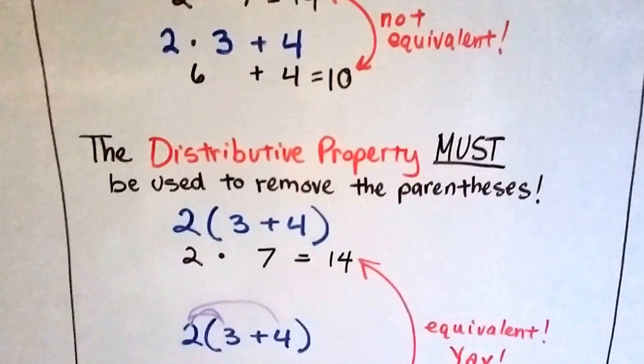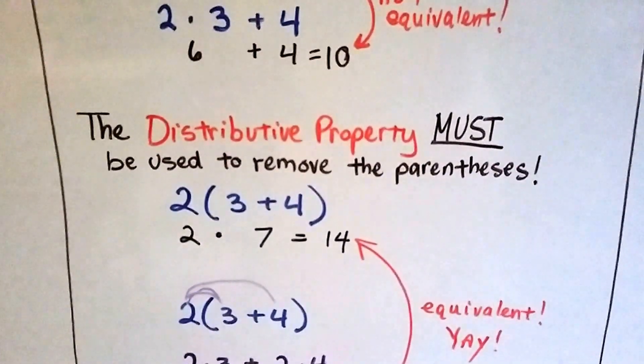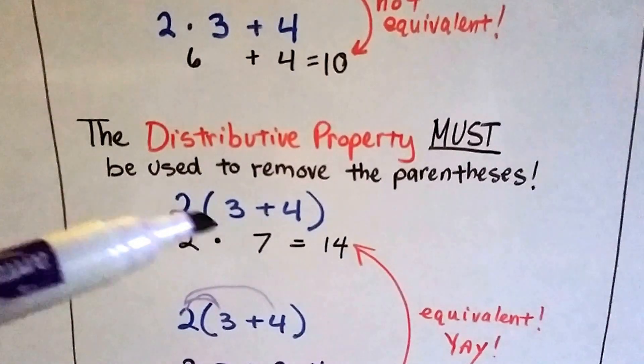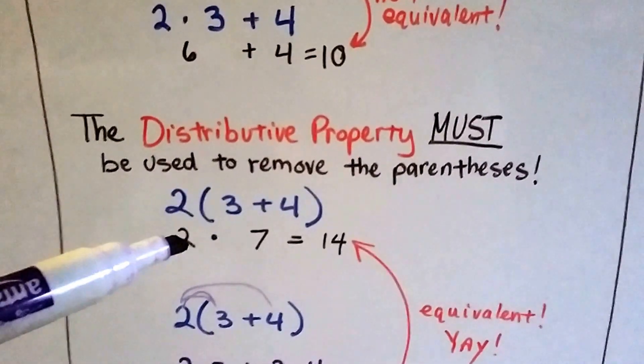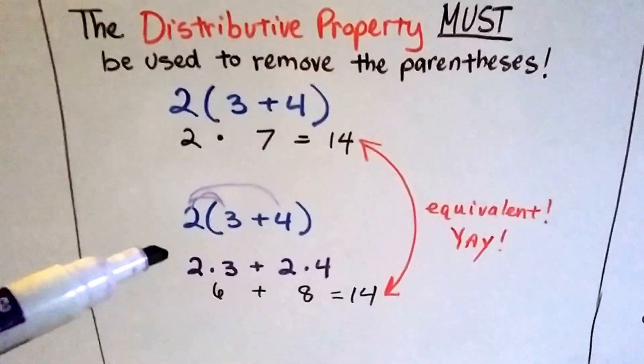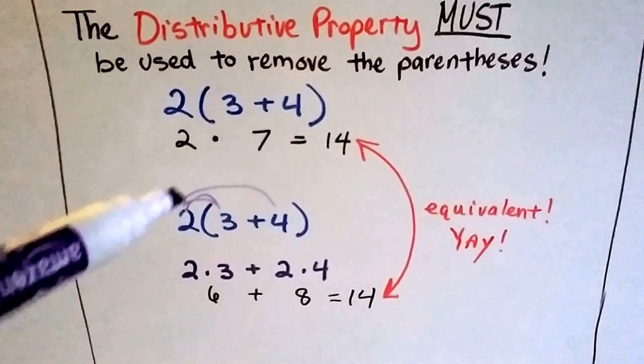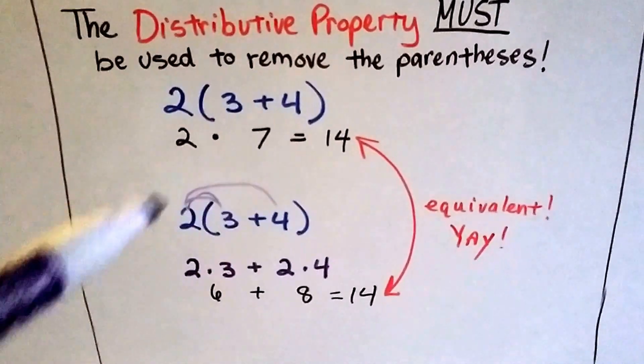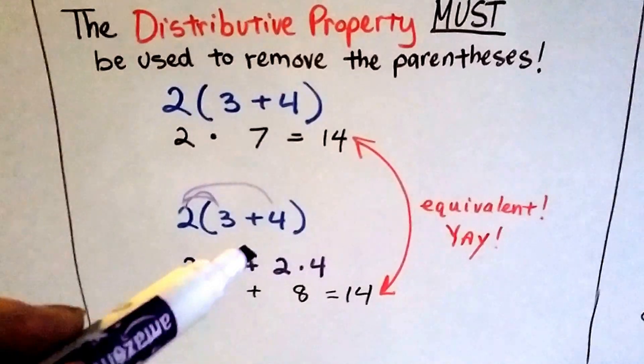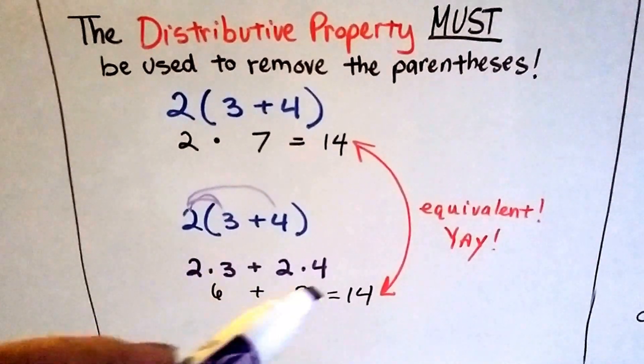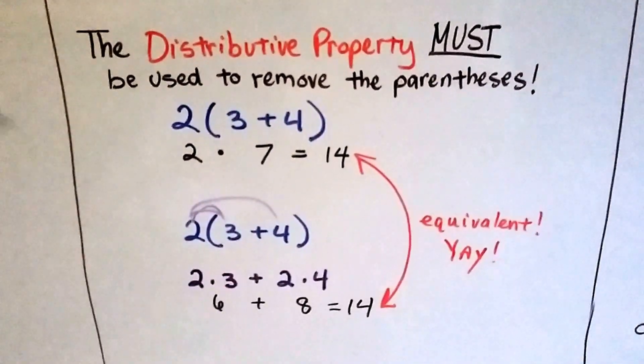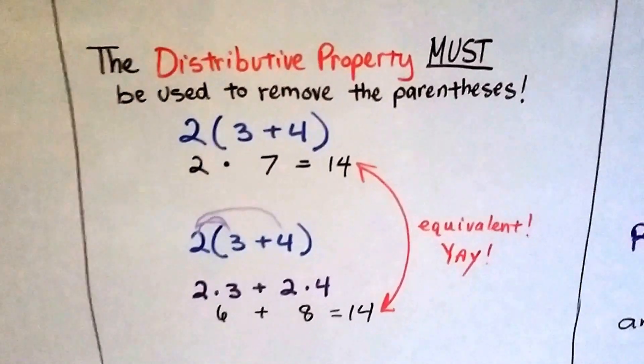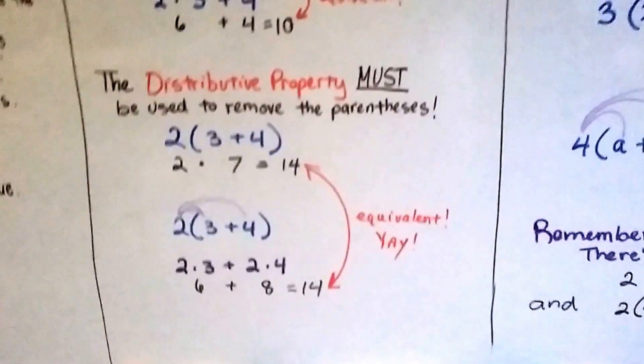Well, the distributive property must be used to remove the parentheses. So we know that 3 plus 4 is 7 and times 2 is 14. What we do is we distribute the 2 to the 3 plus the 2 to the 4. 2 times 3 is 6 plus 2 times 4 is 8. 6 plus 8 is 14. And yes, yay, they're equivalent. It worked. So we've got to use that distributive property.